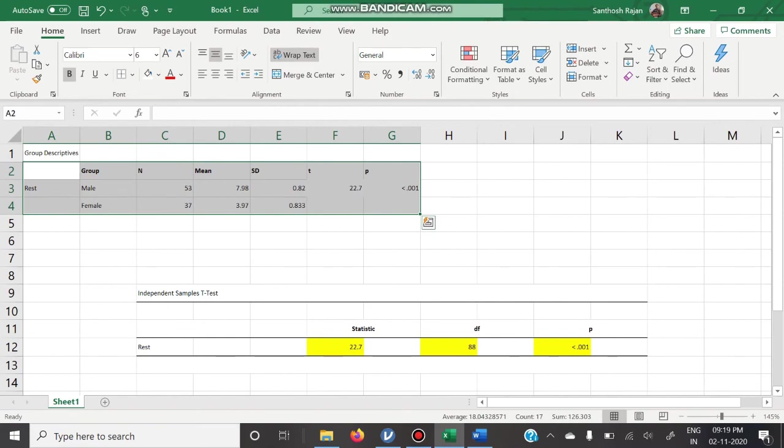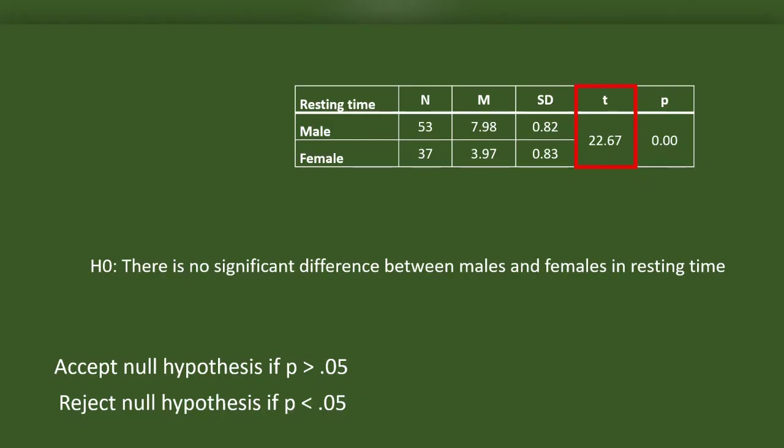Copying this, this is the table we just prepared. This is the t: 22.67. This is the most important value in this table. The t indicates if there is a significant difference between males and females in resting time.